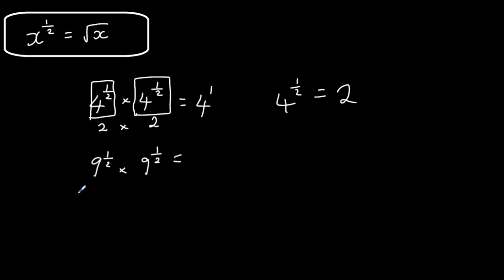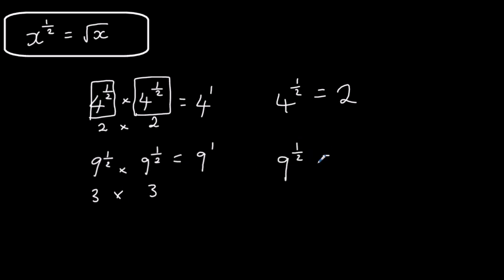Here I've got nine: nine to the power of a half times nine to the power of a half is nine to the power of one. Again, we've got two numbers that must be the same and multiply to give nine, so these must be three and three. So nine to the power of a half must equal three. The rule is: power of a half means square root.